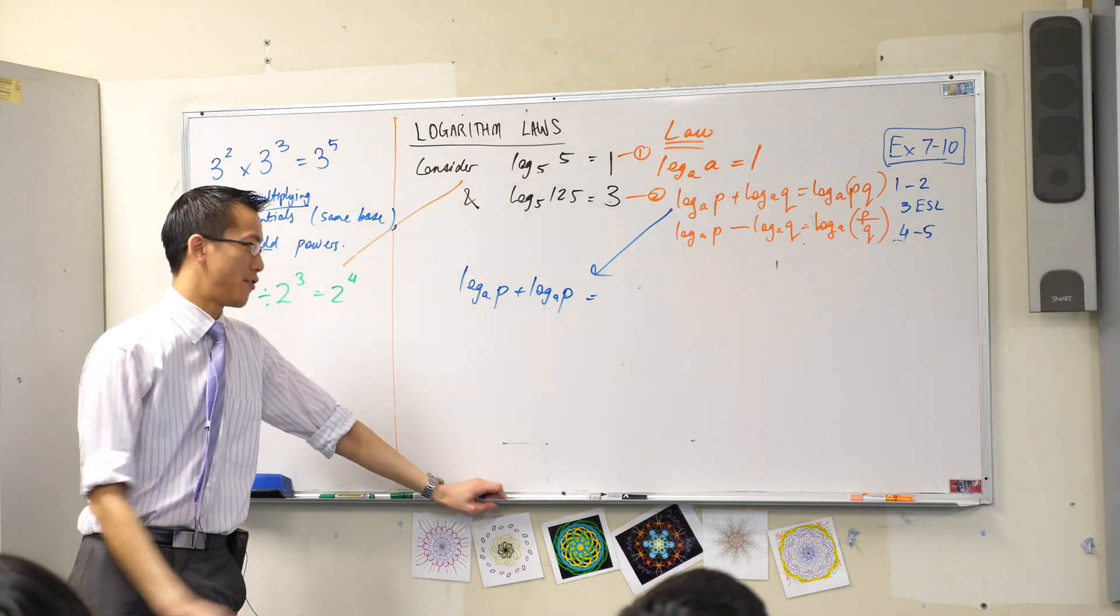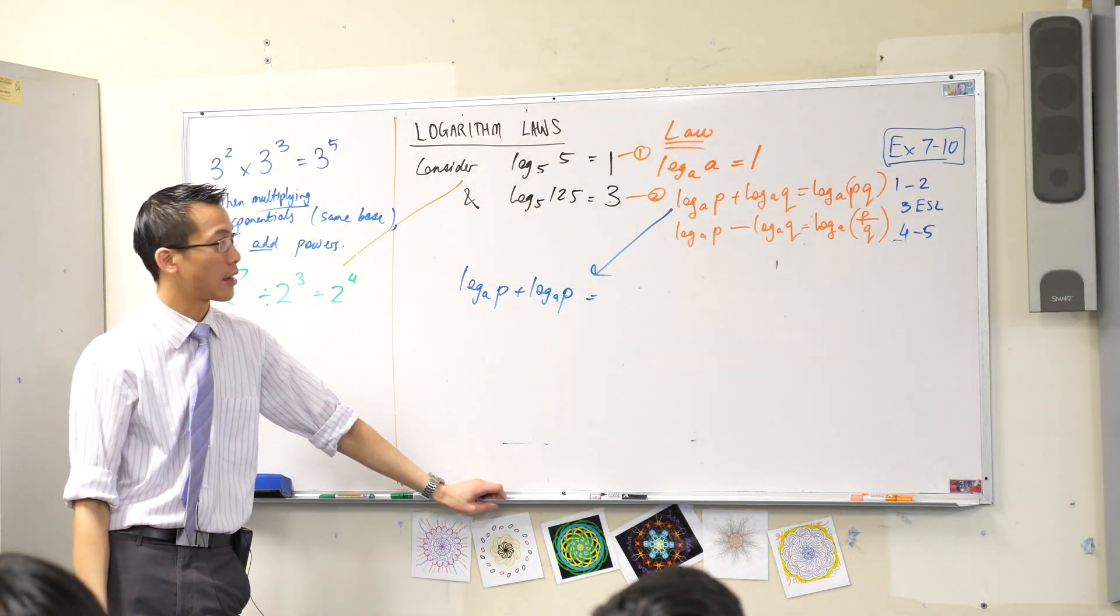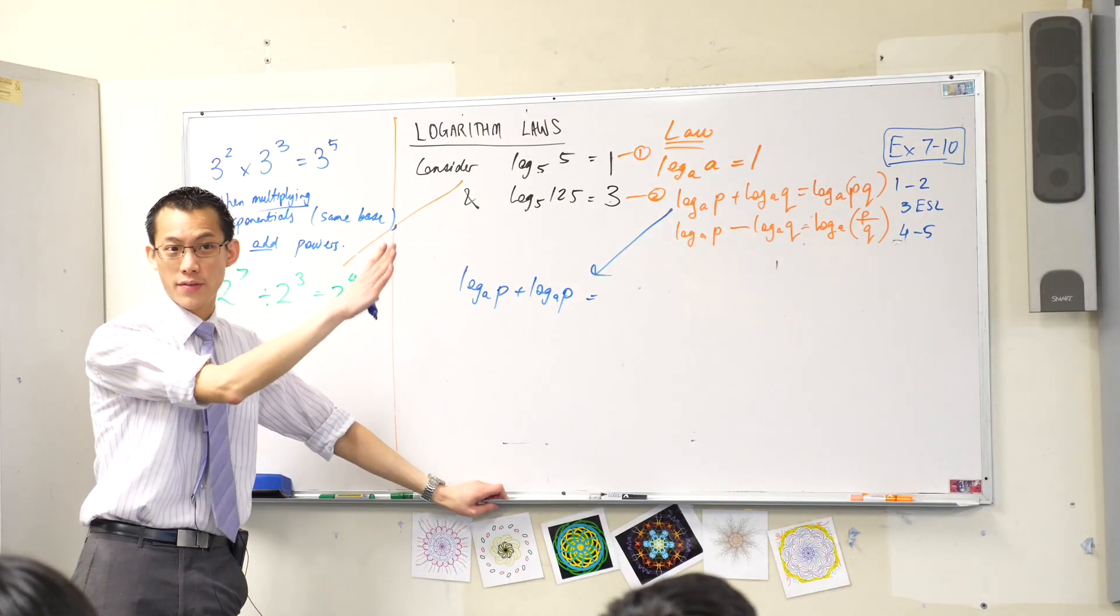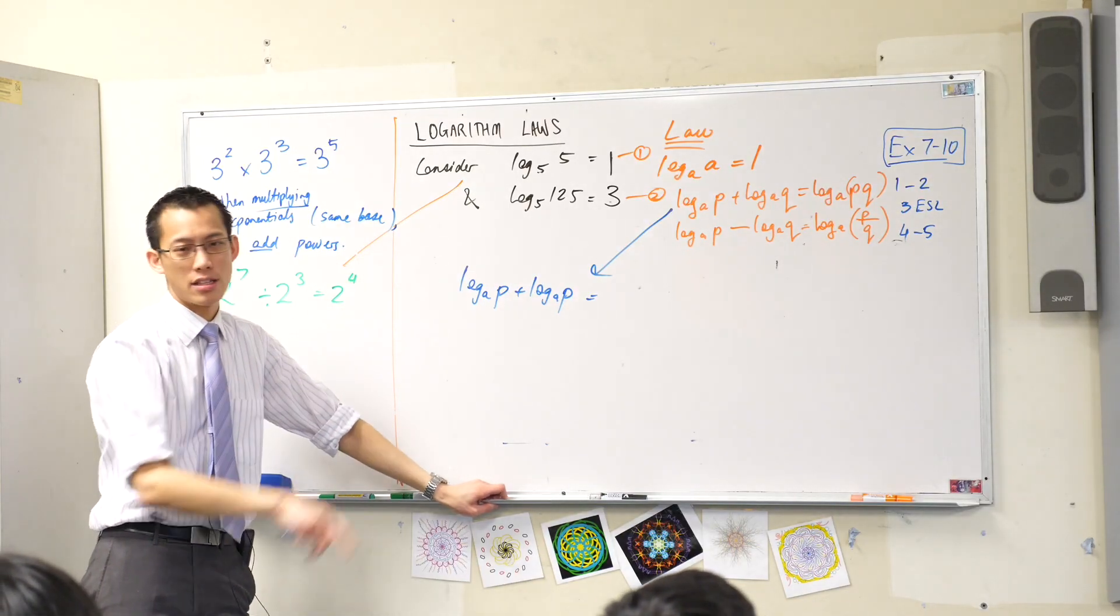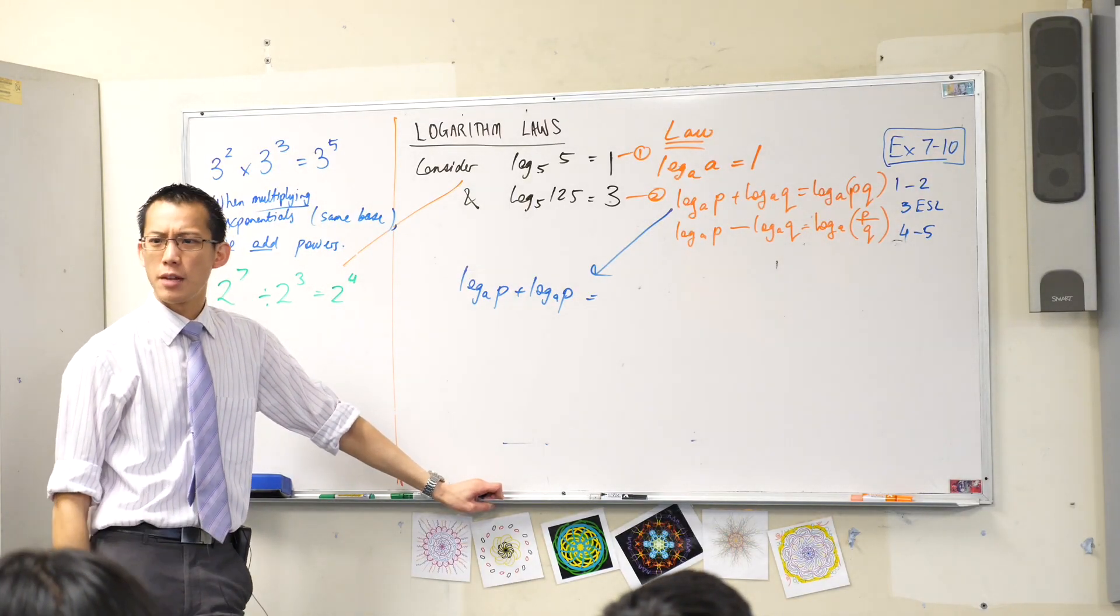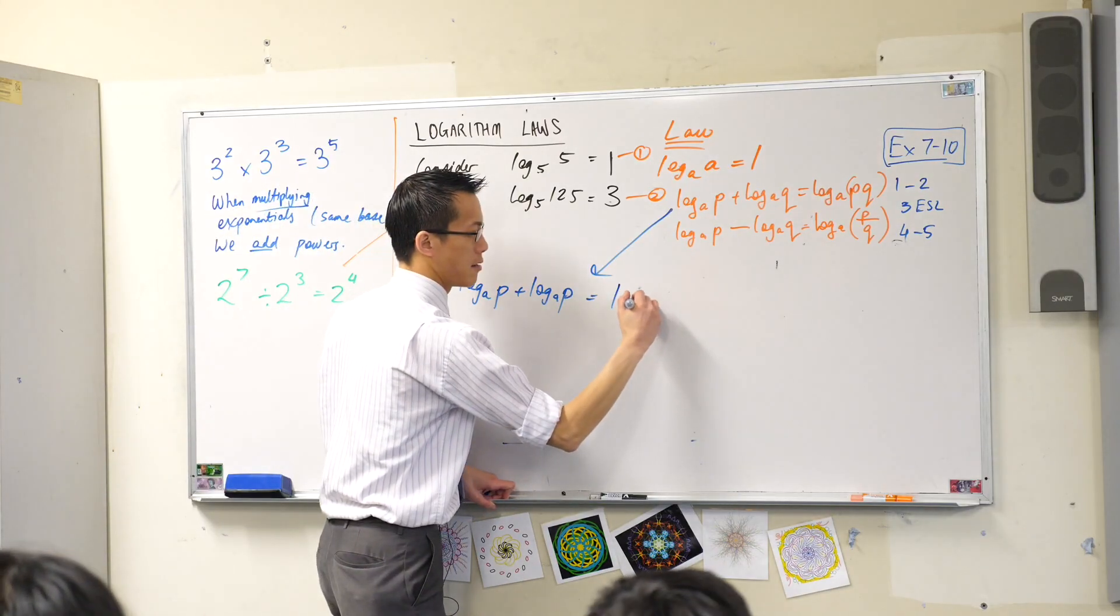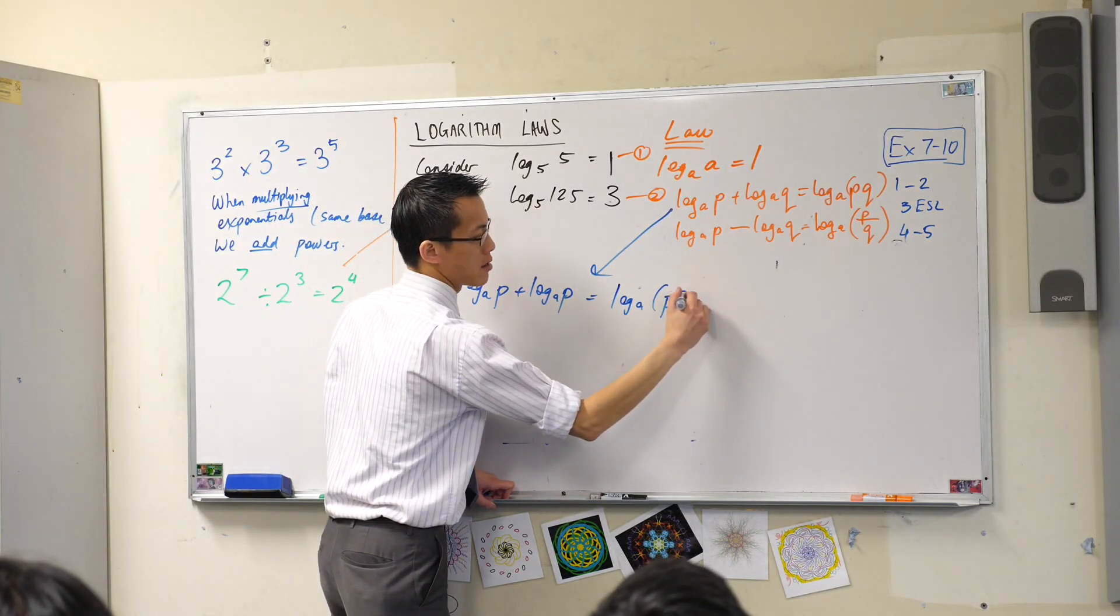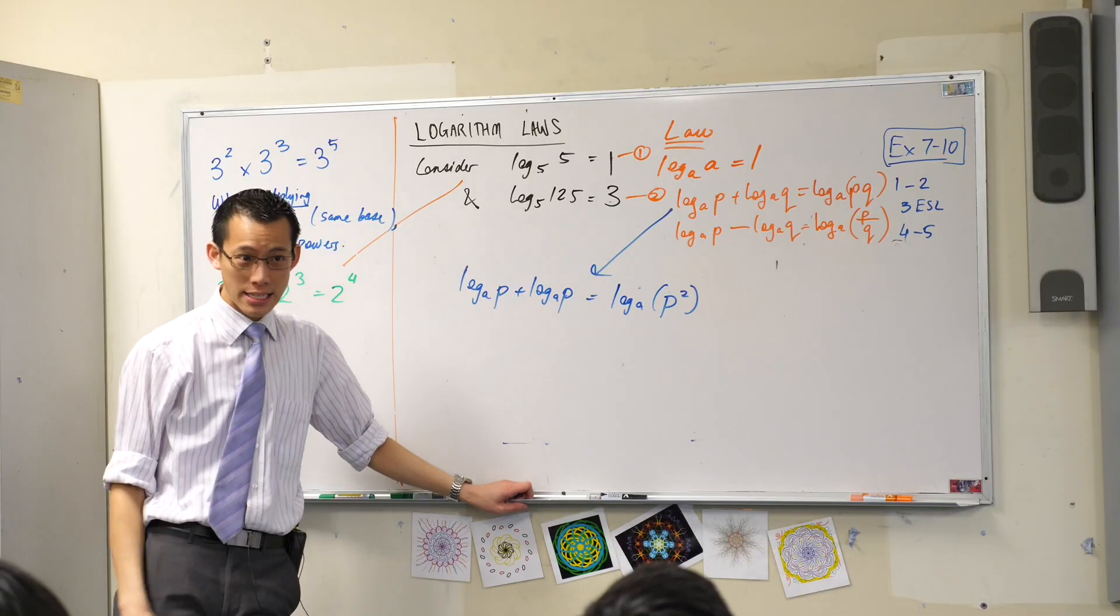If P and Q are the same number, if they're both equal, say, to P, what does the law that we've just developed, what does that tell you the right hand side should be? It'd be log base A of P squared. Isn't it?